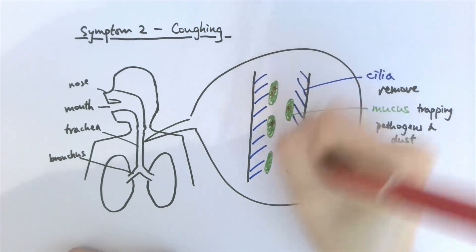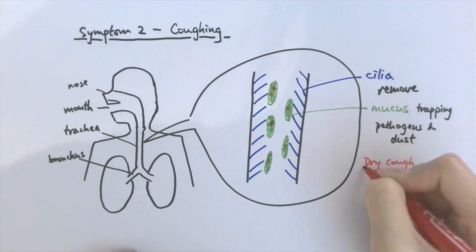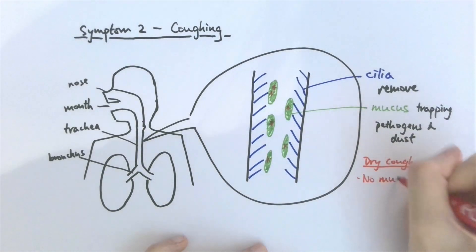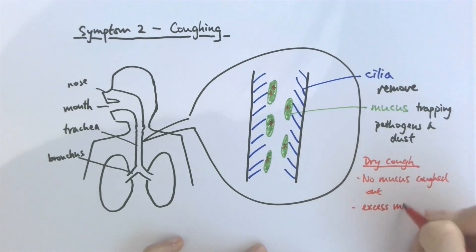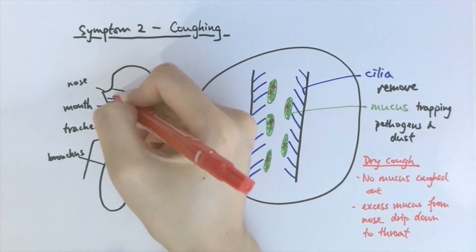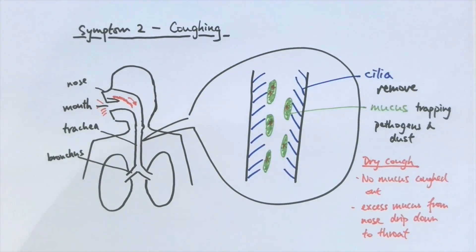However, in the case of COVID, a dry or non-productive cough usually means no mucus is being coughed out, and it's hard to say exactly what triggers the dry cough. A possible reason is excess mucus production in the nose due to COVID or other irritants, which drips down to the throat, tickling nerves there and triggering a cough. Some patients also experience a wet or productive cough, in which case excess mucus from the respiratory tract is successfully removed along with the virus.